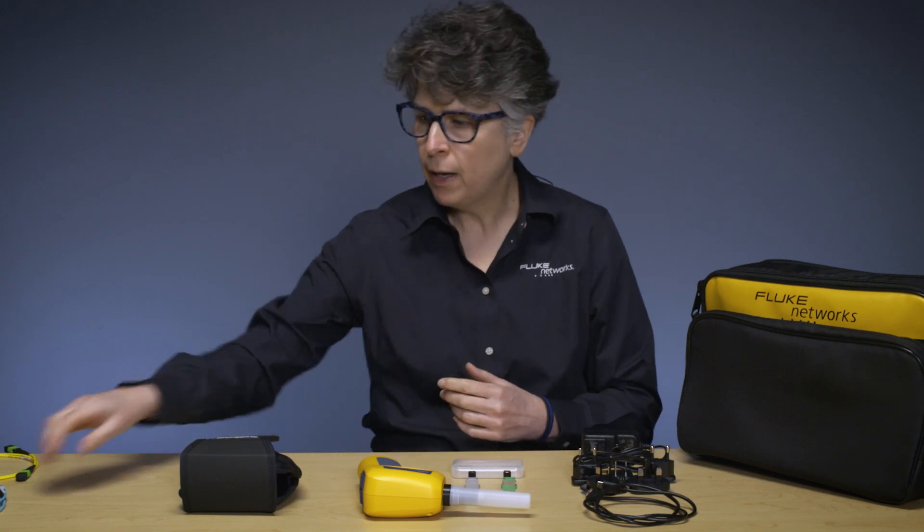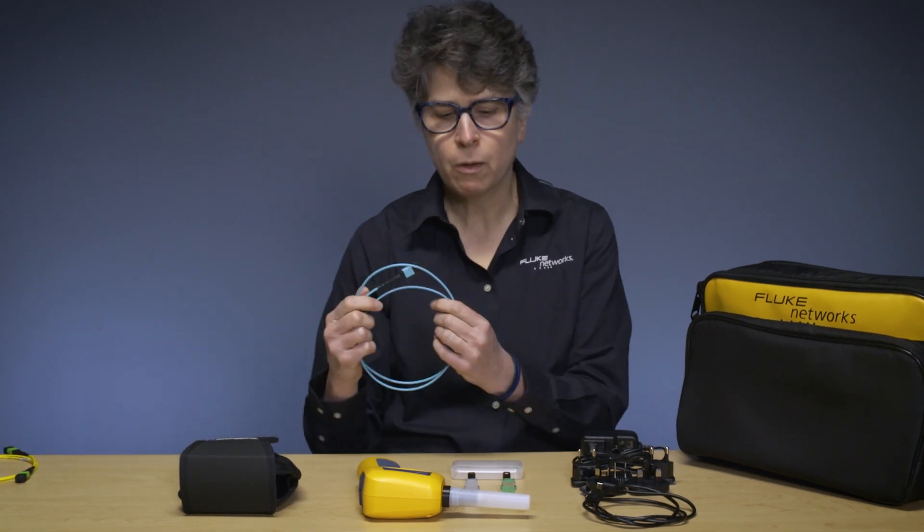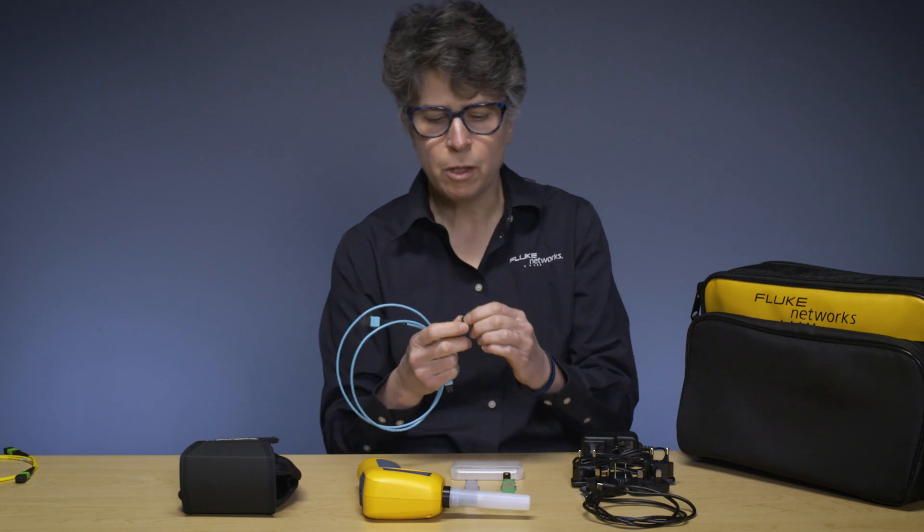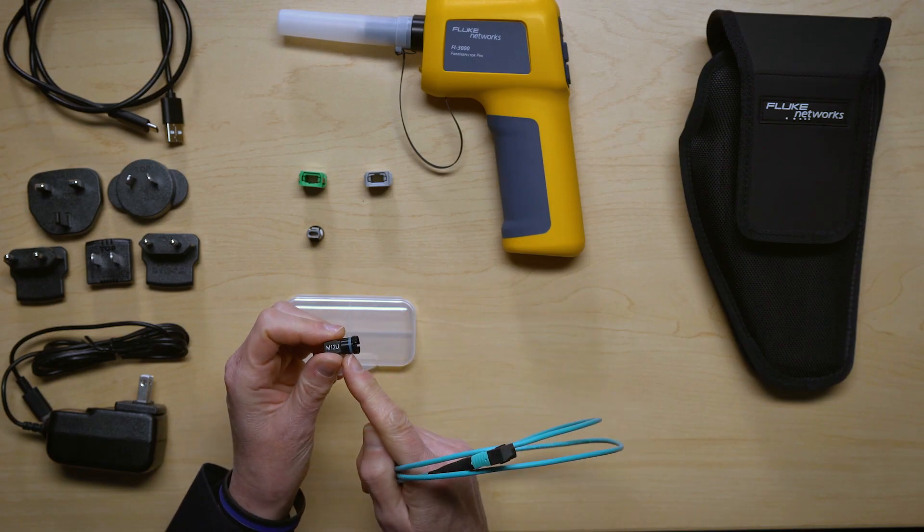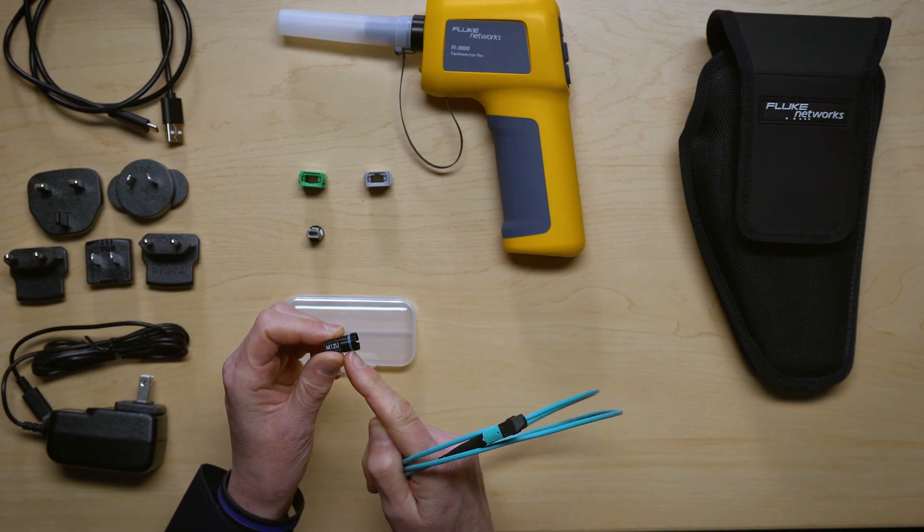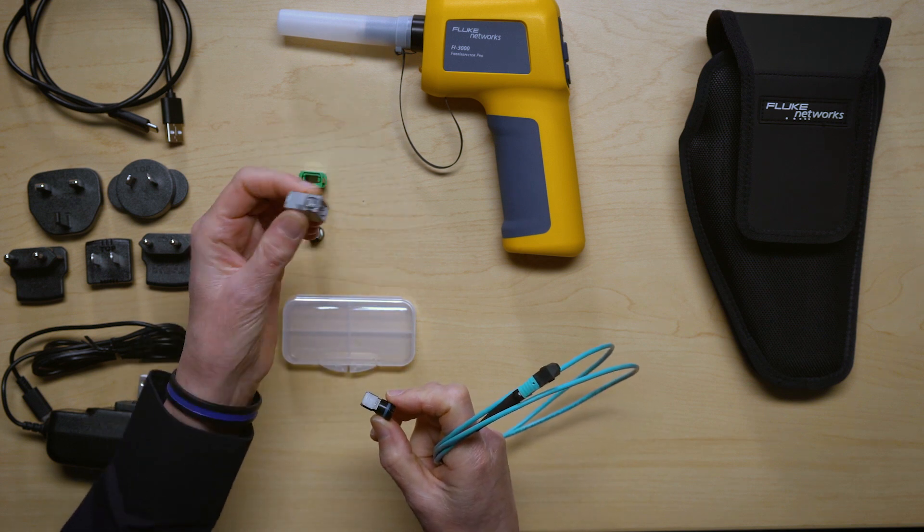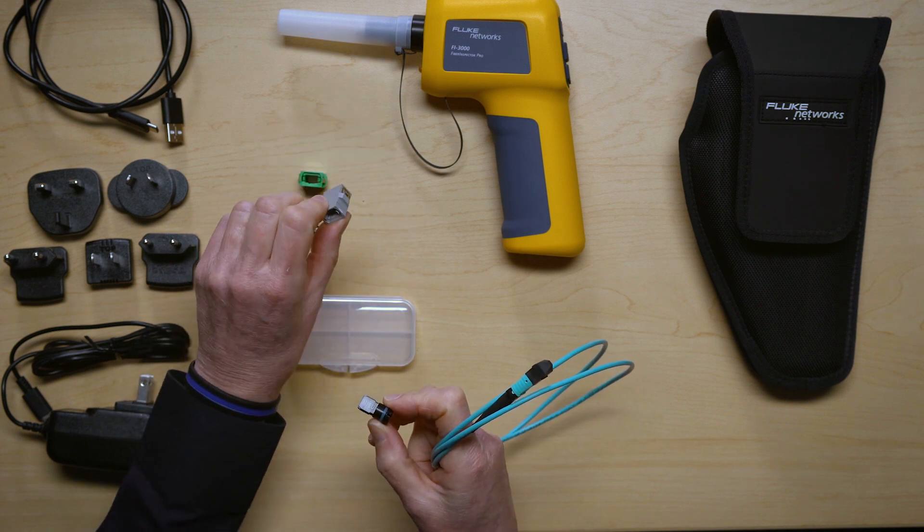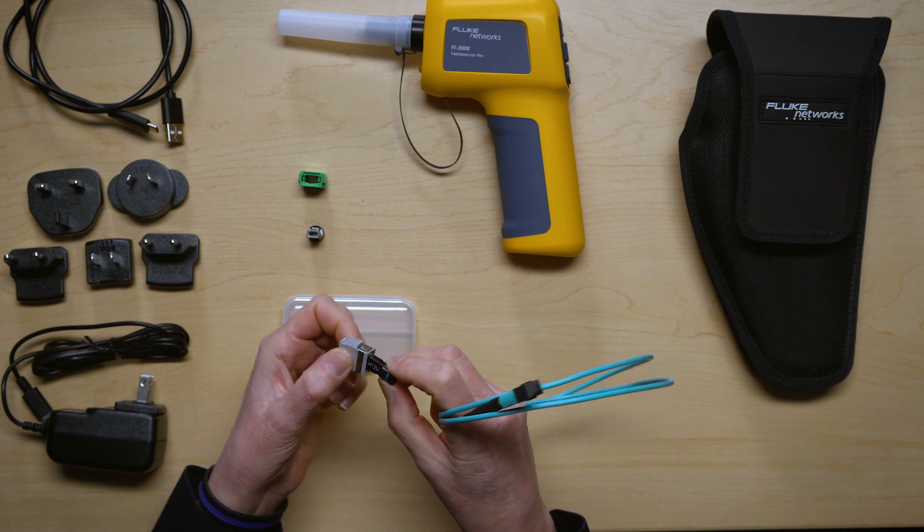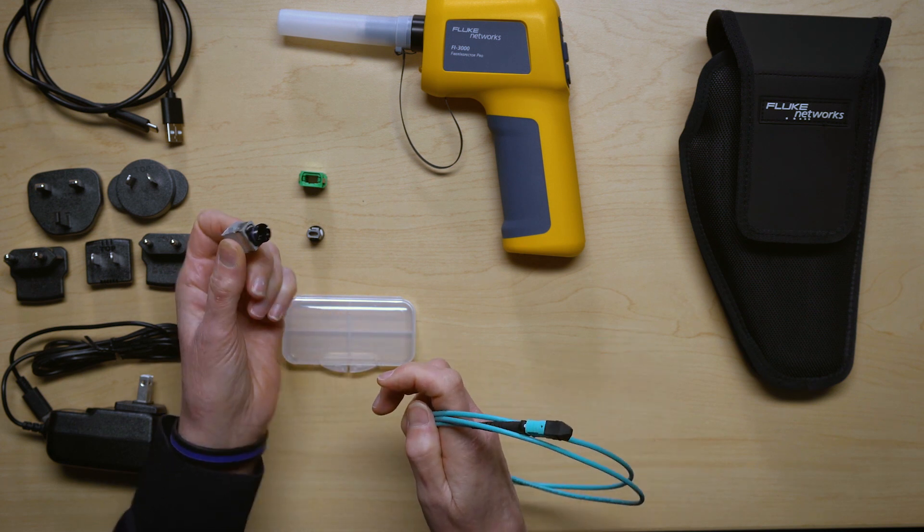If you have multimode which is aqua you're going to be using a UPC tip which looks like this and notice it has an aqua or blue ring on it. You will also be using a key up key up gray adapter to connect to an interface.